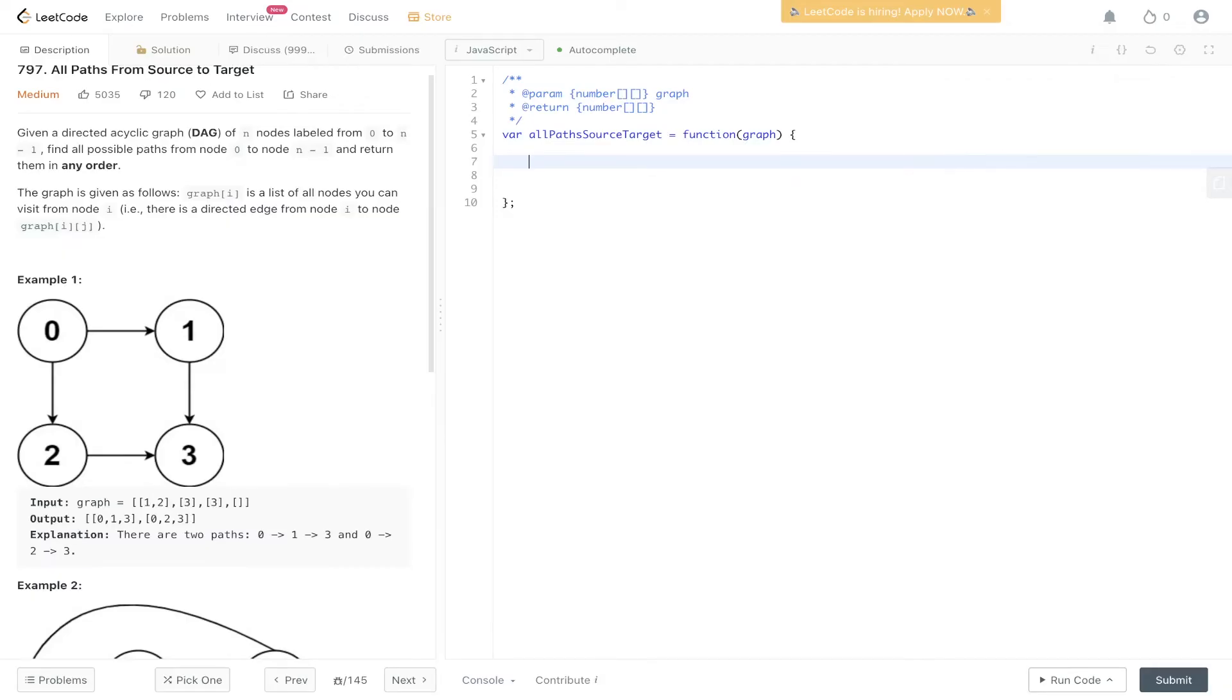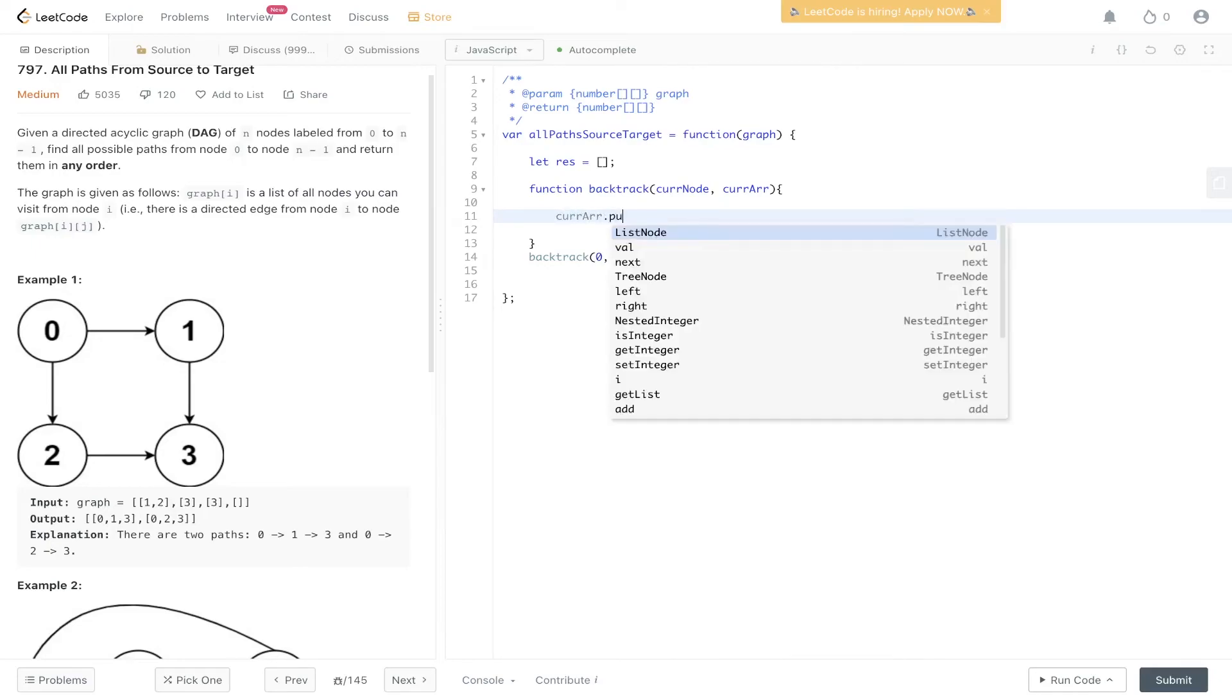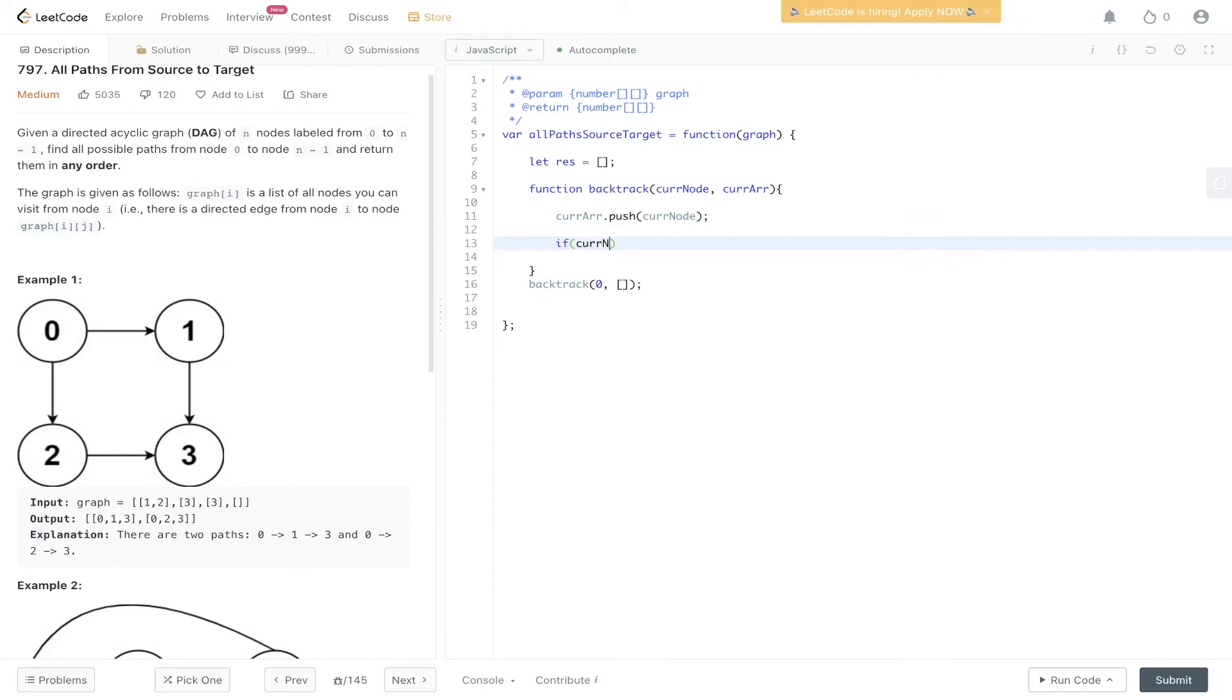So there's not much code to this. We first initialize the result array. Then we create the function, let's call it backtrack. We pass in current node and current array as parameters. And when we call it, we pass in 0, which is the starting node, and an empty array. Then immediately when we enter this backtrack recursive call, we're going to have to push into current array the current node. So now we need to make the check whether we've gone from 0 to n minus 1, so we found a potential path. And we do that by checking if current node is equal to graph.length minus 1.